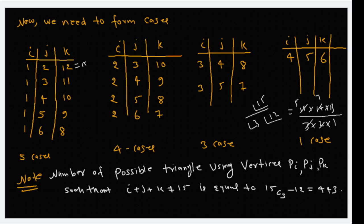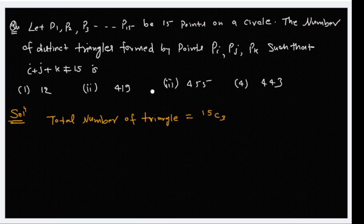What are the options? The options are 12, 419, 455, and 443. So our correct answer is option 4, which is 443.